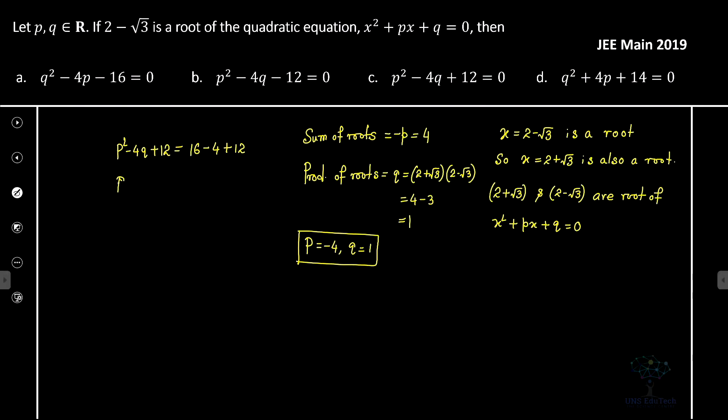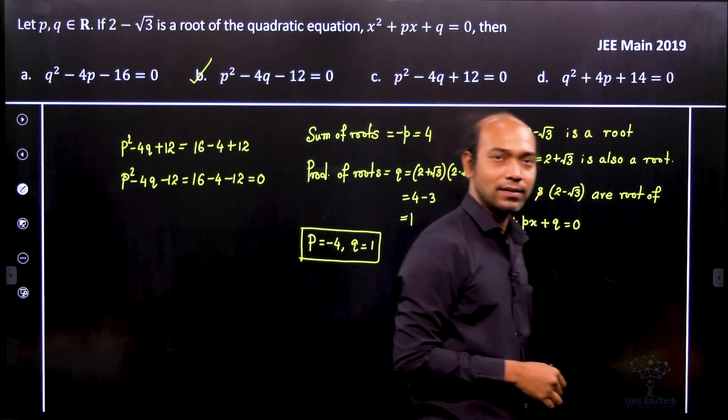Now if I go ahead and substitute the other equation, just for a trial, we substitute it as p squared minus 4q minus 12 equals, then you can see it is 16 minus 4 minus 12 and that equals 0. So therefore in this case option b is definitely the correct answer.